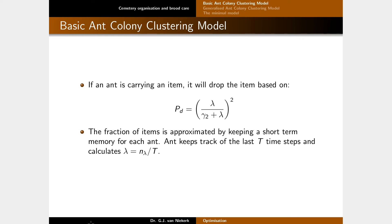If an ant is carrying something, it also wants to drop it based on some probability. We have γ2, a constant that defines how eager the ant is to drop something. The smaller that value, the greater the probability of dropping; the larger it is, the more likely the ant is to keep carrying the item. λ here is the number of items of the same type the ant has seen. The more of these items it sees, the higher the probability it would drop the item.